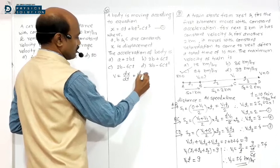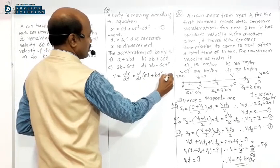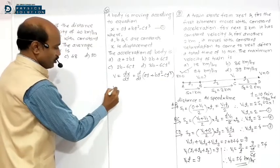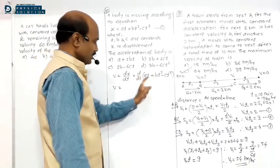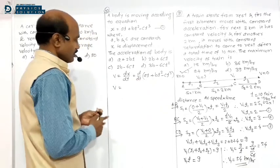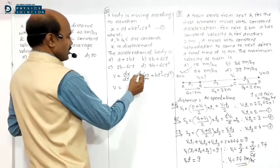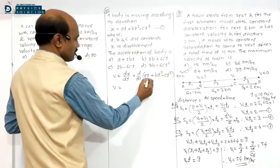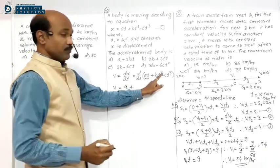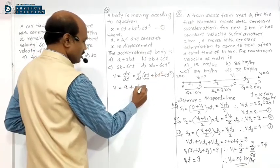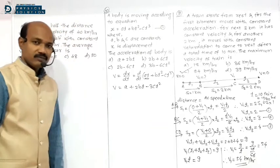Velocity V = d/dt of X = d/dt of (AT + BT² − CT³). Differentiating with respect to time: d/dt of AT gives A; power of T in BT² is 2, so that gives 2BT; and for CT³ the power is 3, giving 3CT². So V = A + 2BT − 3CT².